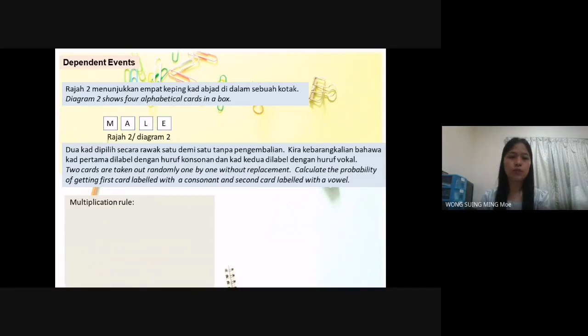We use multiplication rule. Probability getting a consonant is 2 over 4. Why 2? Because consonant letter from the diagram 2, we have M and L. Total of the card is 4. 2 over 4 equal to 1 over 2. Probability getting a vowel, 2 over 3. Why over 3, not over 4? Because you must know this is dependent event.